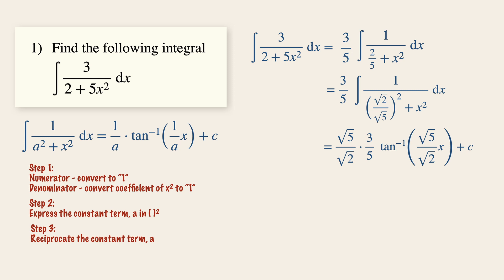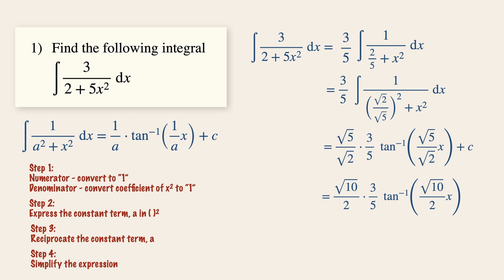Now let's simplify the first term by rationalizing the denominator. Multiplying square root of 2 on both the numerator and the denominator, we get square root of 10 over 2, multiplied by 3 over 5, times tangent inverse of square root of 10 over 2 times x, plus c. Simplifying further gives us 3 square root of 10 over 10, times tangent inverse of square root of 10 over 2 times x, plus c. This is the integral of the expression.